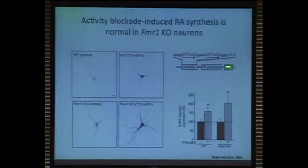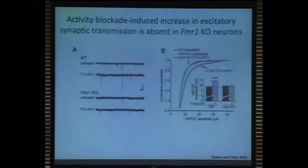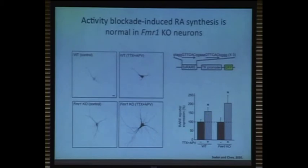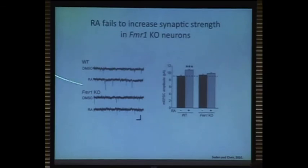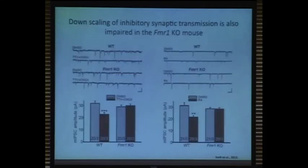Without describing the details, we used a reporter expressing GFP under the control of RA — so if you have more RA in the neuron, more GFP is expressed. We show that in FMRP knockout neurons, the synthesis of retinoic acid is absolutely normal; they respond to activity blockade just like normal neurons. But what is really abnormal is that in wild-type neurons, when you block synaptic activity for a day or two, you see a robust rebound of the synaptic response — homeostatic synaptic plasticity, with increased excitatory synaptic strength. This phenomenon is completely missing in Fragile X neurons. And if we bypass the activity blockade and directly apply retinoic acid onto neurons for half an hour, we see this increase in synaptic strength in wild-type neurons, but not in the knockout neurons. So something is wrong downstream of RA signaling.